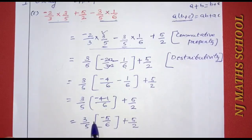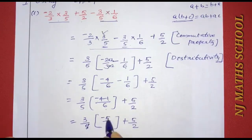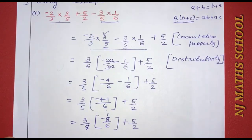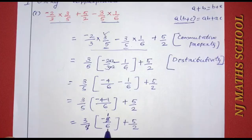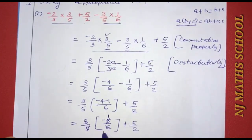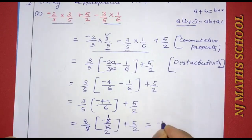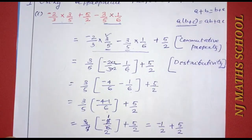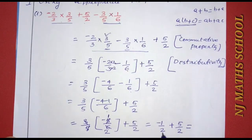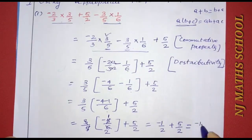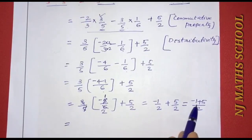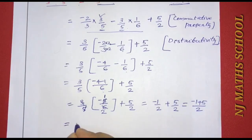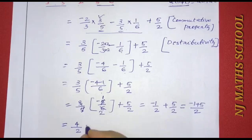We cancel: 3 by 5 into minus 5 by 6 — the 5s cancel and the 3 and 6 simplify to give minus 1 by 2. Then minus 1 by 2 plus 5 by 2 equals minus 1 plus 5 divided by 2, which equals 4 by 2, that is equal to 2.